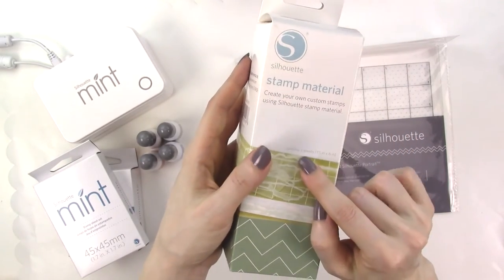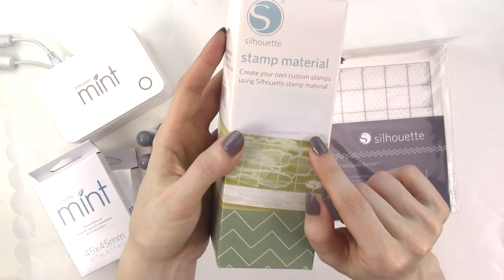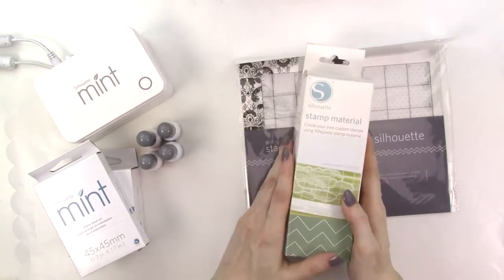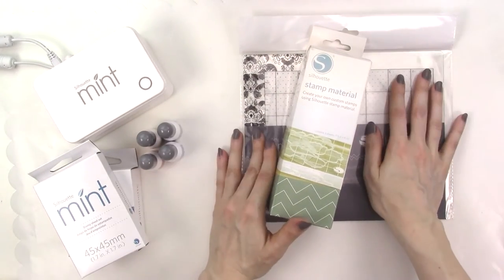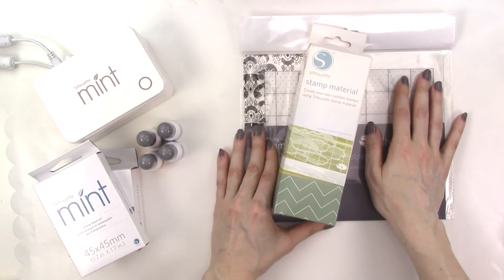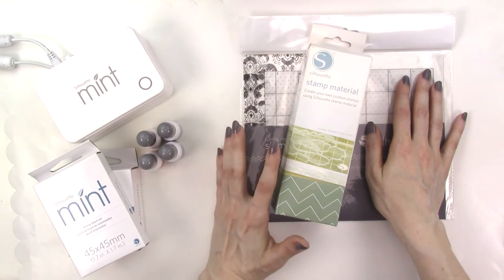But if you already do stamping you probably have stamp blocks and inks that you can use so it's up to you whether it's worth it to purchase the full kit. I just purchased a package of three sheets of the stamp material plus the special mat that's needed to cut the material. You can purchase both for under $10 total on amazon.com and for about $12 total from the Silhouette America website.